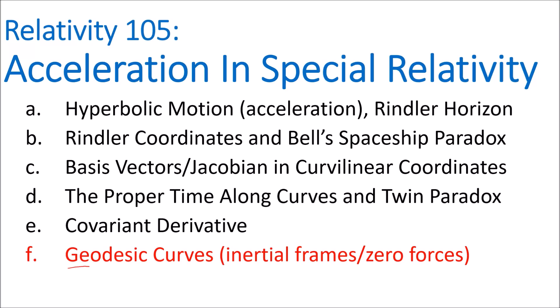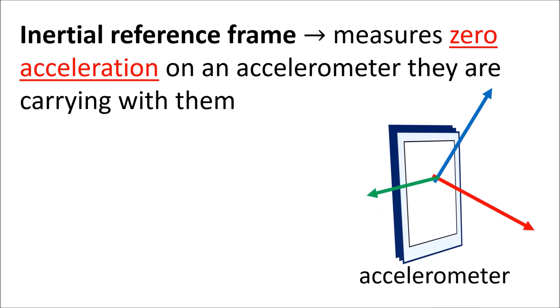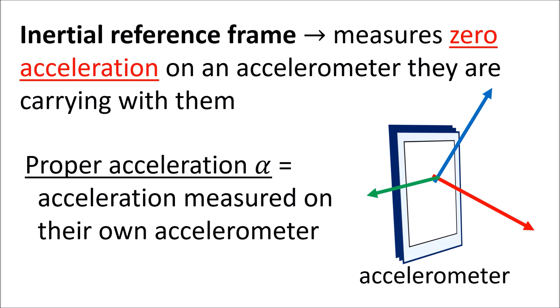In this video we're going to talk about geodesic curves, which are the spacetime curves that inertial frames and beams of light travel along in special relativity and general relativity as well. An inertial frame of reference is a frame of reference that will always measure zero acceleration on an accelerometer that they are carrying with them. The acceleration that an observer measures on their own accelerometer is called their proper acceleration, and it is denoted by alpha.